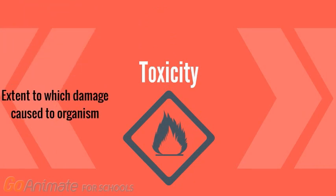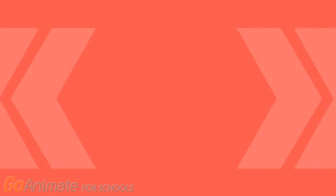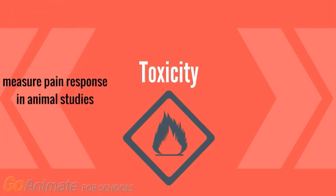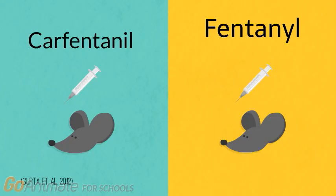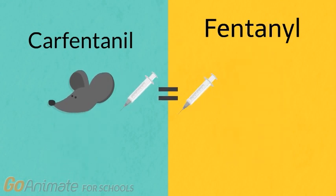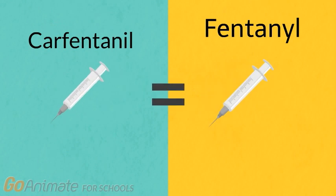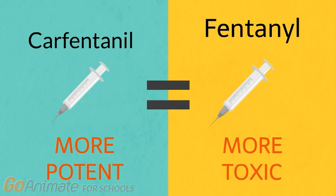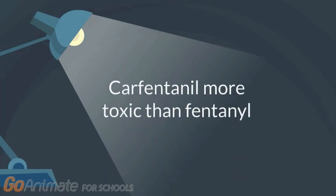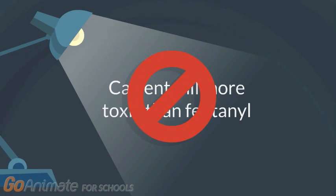Toxicity is the extent to which damage is caused to an organism by a substance. To assess toxicity, testing in animals can help determine the level since we cannot test on humans. One study looked at toxicity of carfentanil compared to fentanyl in mice. They found that when using the same amount of each to elicit pain, fentanyl was actually deemed more toxic since it caused a higher pain response than carfentanil. This shows that even though carfentanil is more potent, fentanyl is actually more toxic in mice. The claim that carfentanil is more toxic than fentanyl is technically inaccurate; it is better to switch the term 'toxic' to 'potent.'